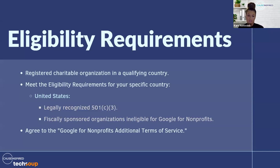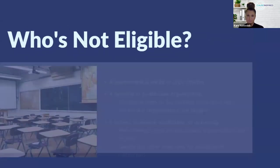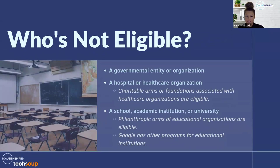You must also agree to the Google for Nonprofits additional terms of service. Organizations who are 501(c)(3) nonprofits but are not eligible include governmental entities, hospitals or healthcare organizations, schools, academic institutions, or universities.